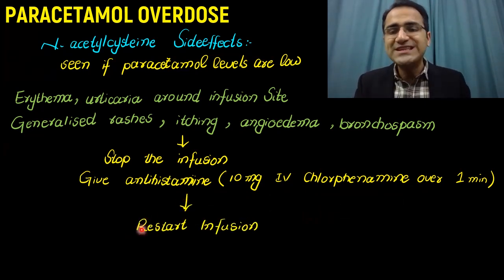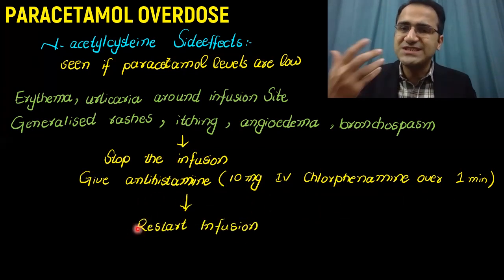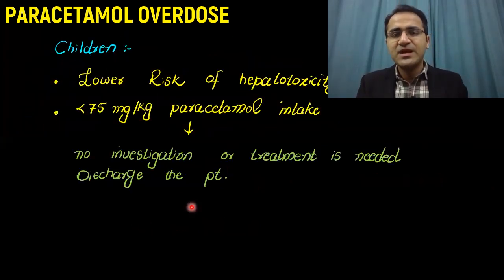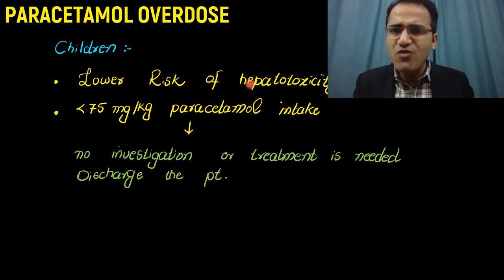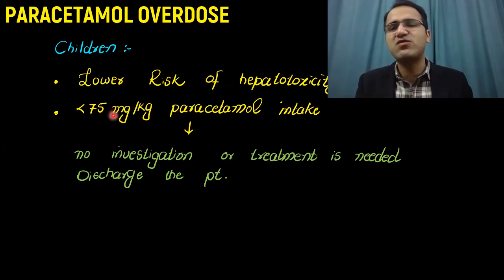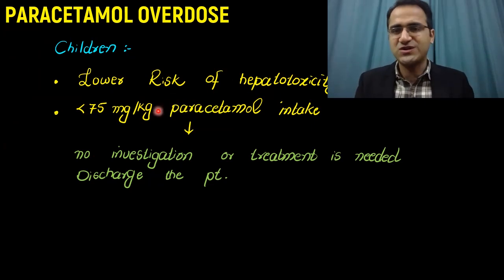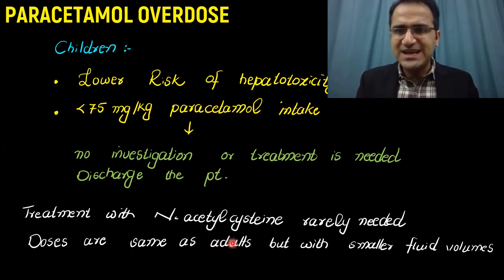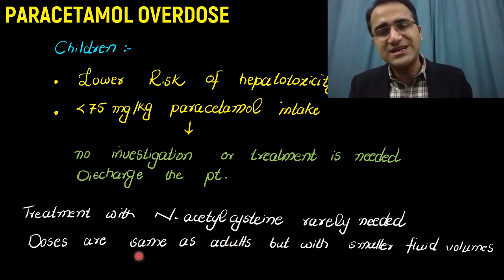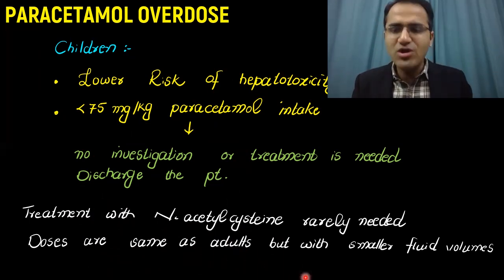Regarding paracetamol overdose in the pediatric group: these patients usually have a lower risk of hepatotoxicity because they have typically ingested less than 75 mg per kg of paracetamol, which is a non-toxic dose, so no investigations or treatment are required. If N-acetylcysteine treatment is required, doses are the same as adults but with smaller fluid volumes.